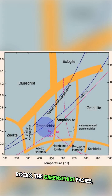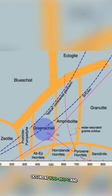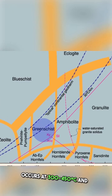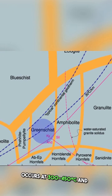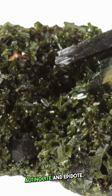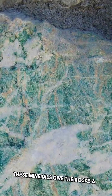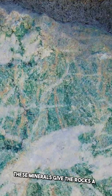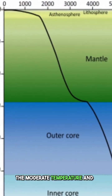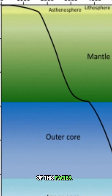The greenschist facies, typical of regional metamorphism, occurs at 300 to 450 degrees Celsius and is marked by chlorite, actinolite, and epidote. These minerals give the rocks a greenish hue and are stable at the moderate temperature and pressure conditions of this facies.